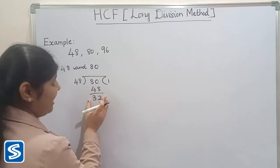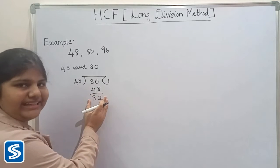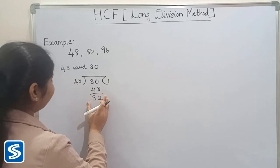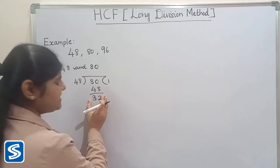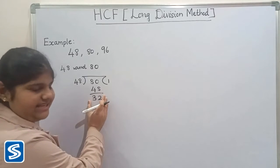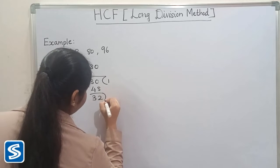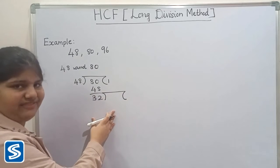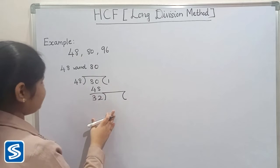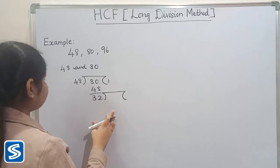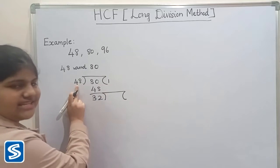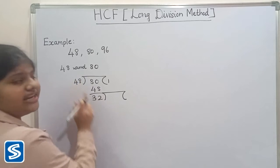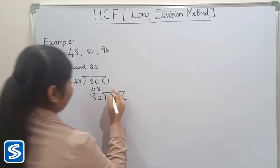Here the remainder is not equal to 0, so now we have to consider 32 as the divisor and the previous divisor as the dividend. Here the previous divisor is 48, so now we have to consider 48 as the new dividend.